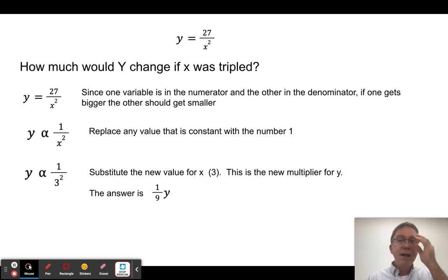Let's try another one. In this case, I have an inverse relationship. One is in the numerator, one is in the denominator. So if the question was, well, how much would y change if x was tripled? So I take my relationship here and I say, all right, I can tell it's an inverse relationship. As one gets bigger, the other one gets smaller. So if x is tripled, I'm expecting y to get smaller. But by how much?